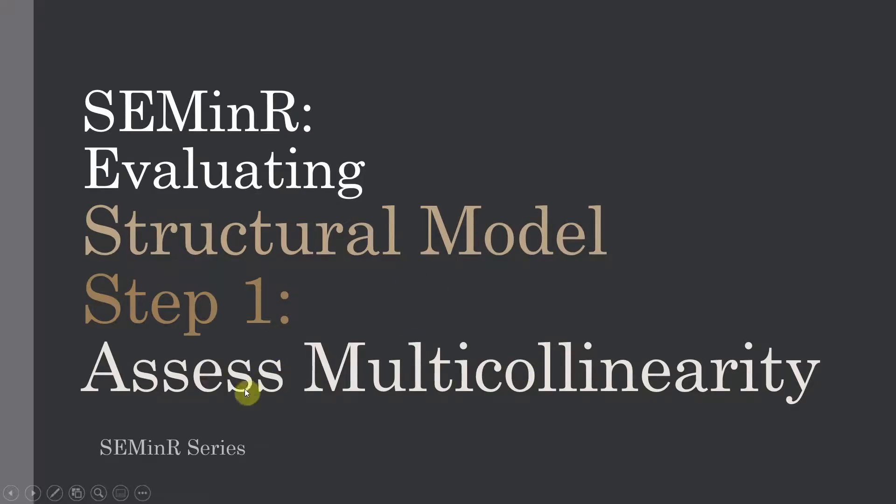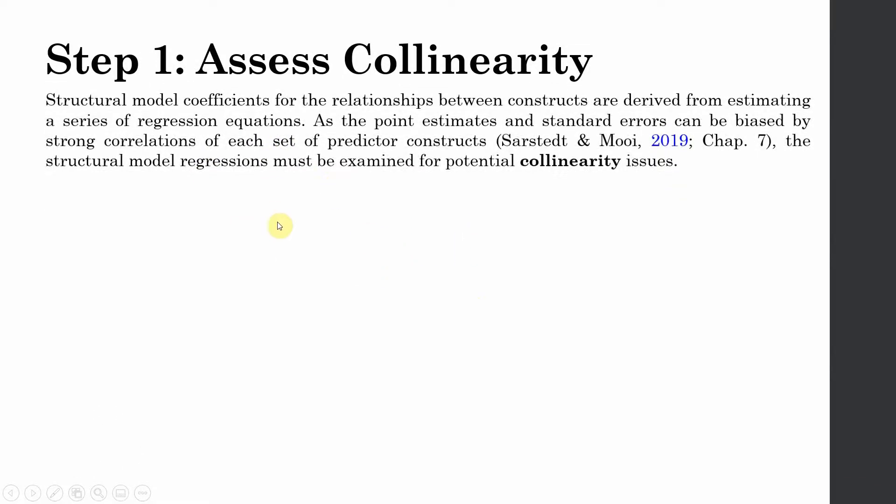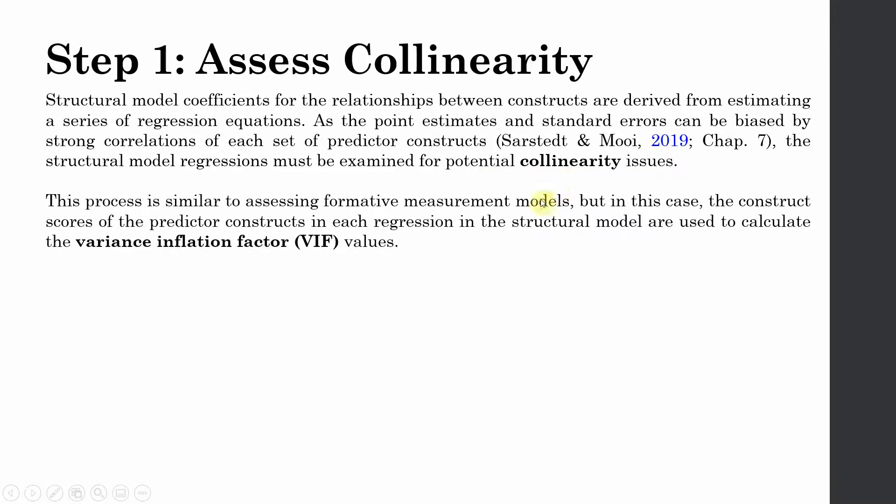So the first step, multicollinearity. How do we assess multicollinearity? We have already done this for items and for our formative model. Structural model coefficients for the relationship between constructs are derived from estimating a series of regression equations. As point estimates and standard errors can be biased by strong correlation of each set of predictor constructs, the predictor construct may have higher correlation with each other and then your point estimates may get biased. For this purpose, you will have to assess your collinearity issues.